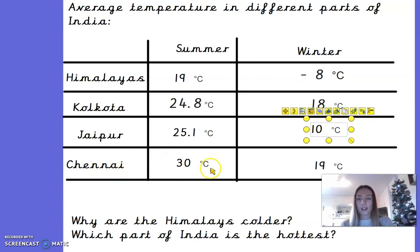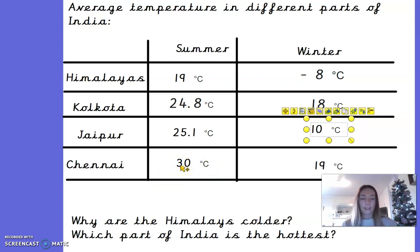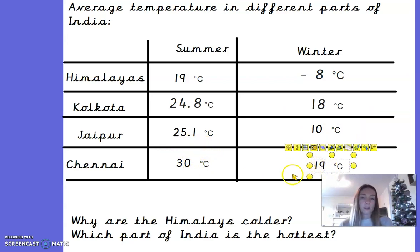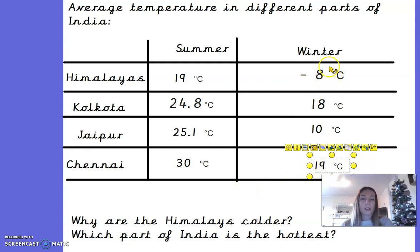Chennai is 30 degrees in summer — that's a really hot summer's day, like if you've been abroad to a hot sunny country in the summer holidays, that's around that temperature. It stays relatively warm in winter too. In the Himalayas, the temperature can get much, much colder because of those cold winds, and that's why it starts to freeze.